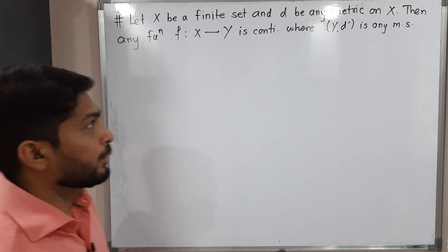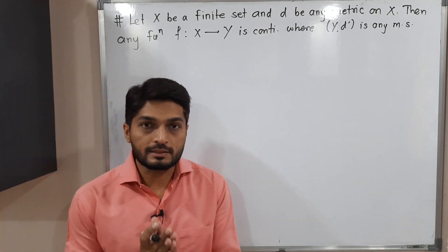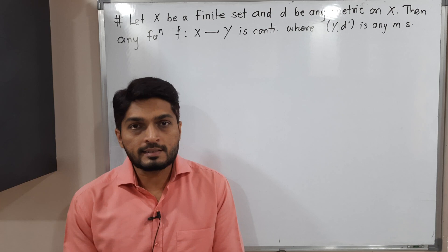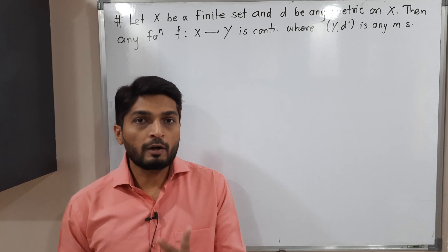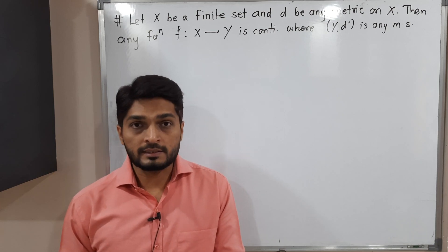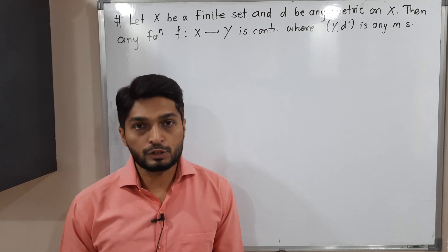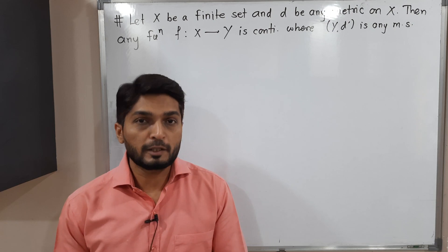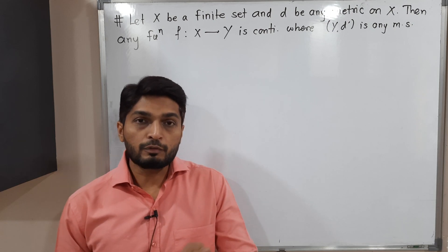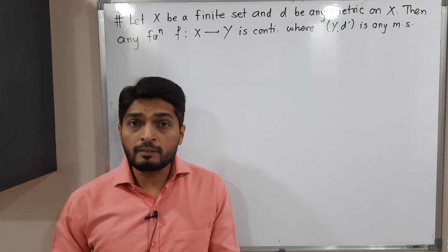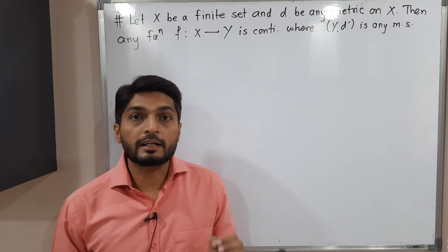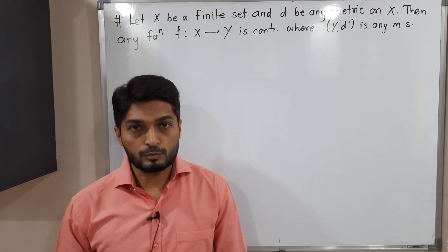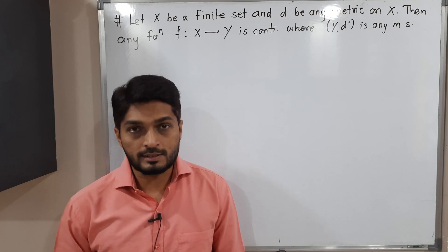Hi everyone. In this video we are going to discuss this result. This result says if you have two metric spaces (X, d) and (Y, d'), where X is a finite metric space, then if you consider any function from X to Y it is definitely a continuous function. So let us prove this result.